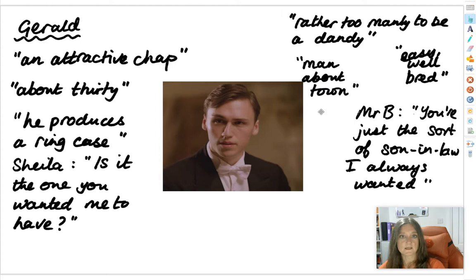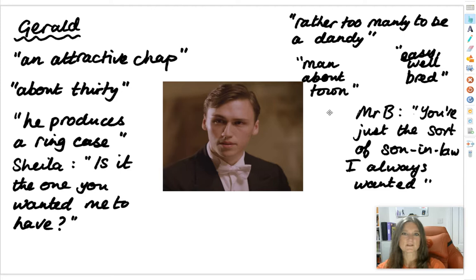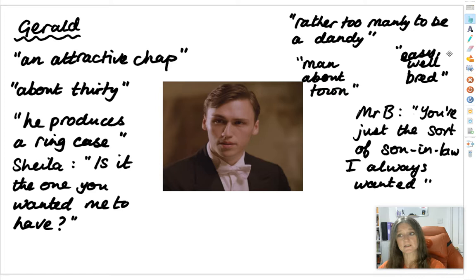A man about town means he's probably been seen with a different girl every couple of months through his 20s, maybe with his name in the papers — almost like the equivalent of a celebrity for Edwardian people. He's described as easy, well-bred. He's had a really good upbringing, is super confident, comfortable in his own skin, and can talk to anybody with ease. Very similar to Mr Birling in that ease, but the difference is Gerald is well-bred — already a member of the upper classes. You can tell that by the way he carries himself.